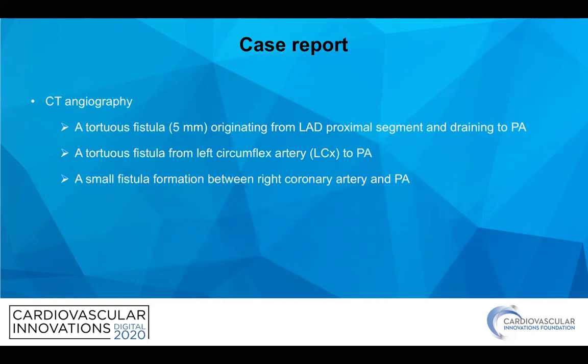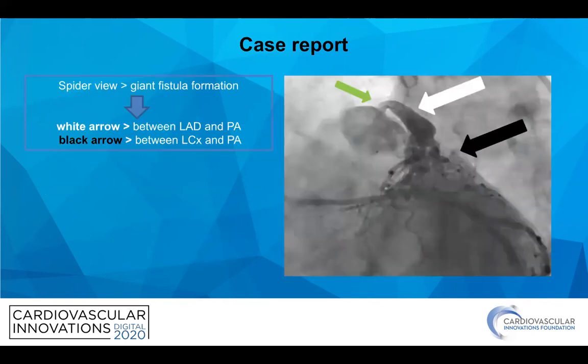CT angiogram showed the connections between the left anterior descending, left circumflex, and the right coronary artery and pulmonary artery. We continued with the coronary angiogram, and in the spider view, you can appreciate the giant fistula formation.